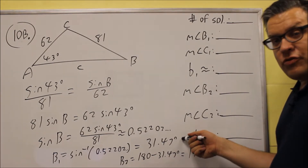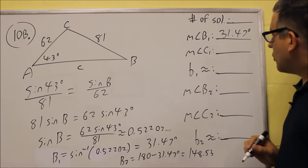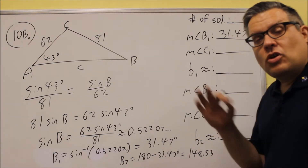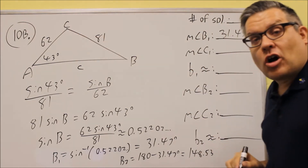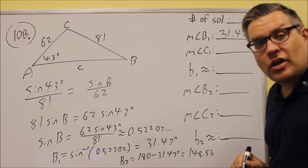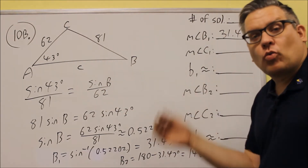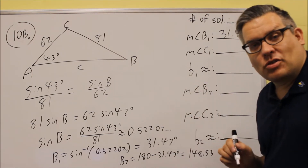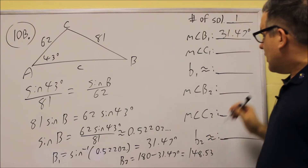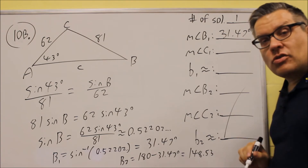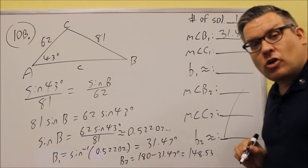So B1 is 31.47. We know we have at least one solution since we were able to get a number — no calculator error. Now, to check whether there are one or two solutions, take 148.53 and add it to the angle already inside the triangle. If those add up to more than 180, we only have one solution; if less than 180, two solutions. Here the result is more than 180, so this only has one solution, meaning we don't need to worry about secondary solutions.